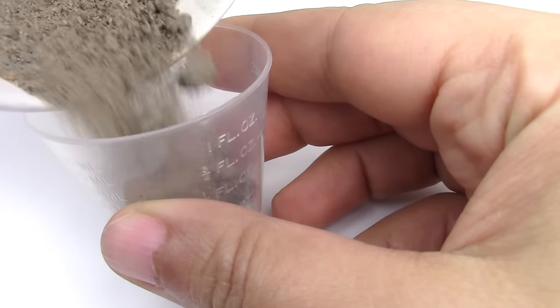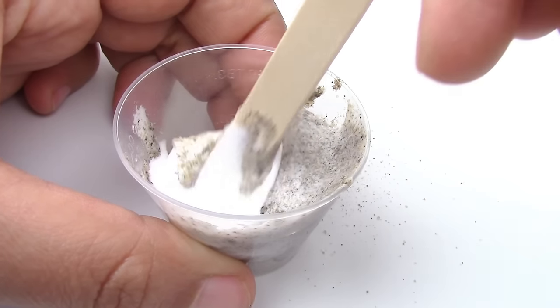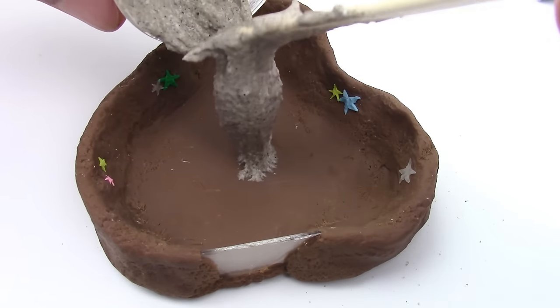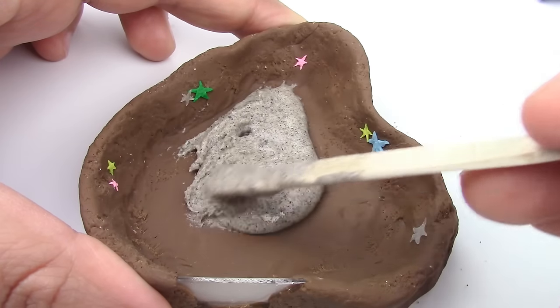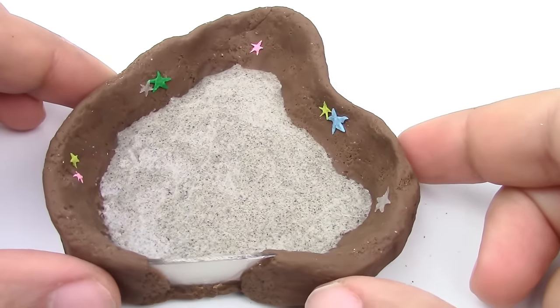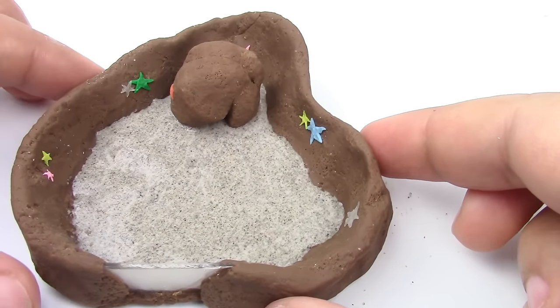Once your base is baked, mix some sand and glue together until you get a smooth consistency and spread a thin layer at the bottom of your base. If you want to add any large rocks, now is a good time to do it. Let it fully dry before continuing. That time will of course depend on your glue.